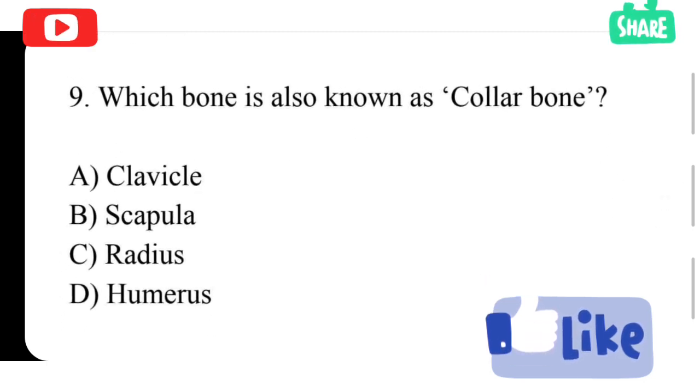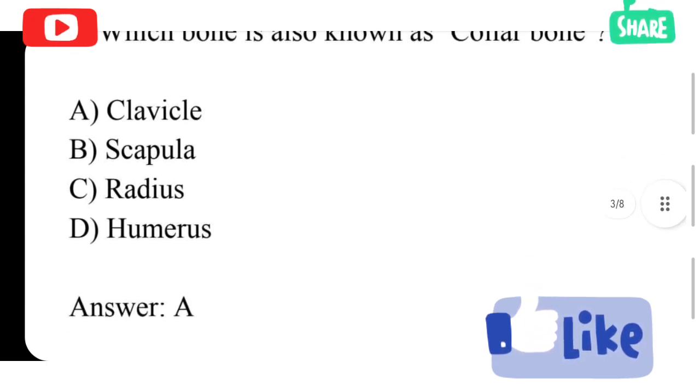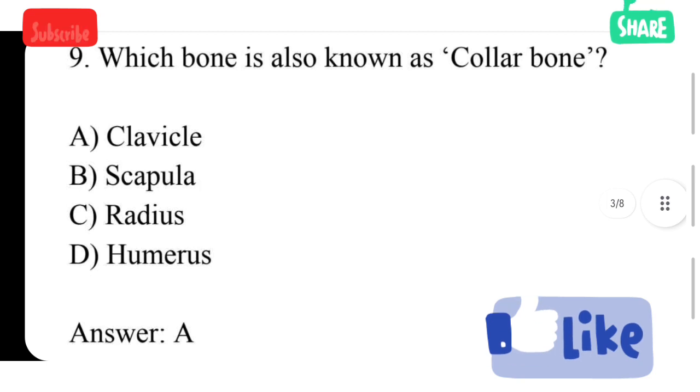Bone also known as collar bone. Option A clavicle, option B scapula, option C radius, option D humerus. Option A is correct answer, clavicle. Clavicle bone is also called as a collar bone.